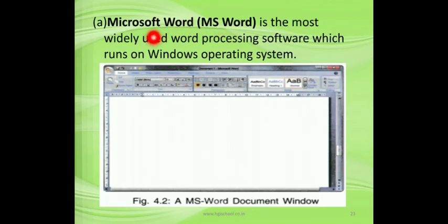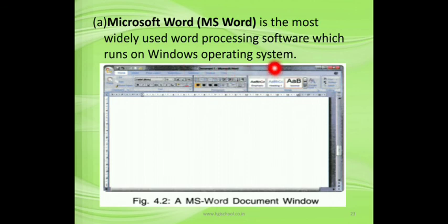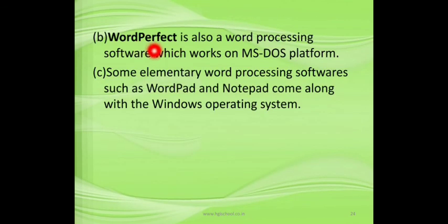These days we can insert pictures, animated pictures, and sounds in word processing documents. Here is an example — this is Microsoft Word, the most widely used word processing software, which runs on the Windows operating system. The screen has a main menu button, a title bar, and a ribbon.